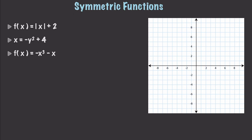So what is a symmetric function? It is a function that has sides that are reflections of each other. I'm going to use these three sample functions to show you exactly what I mean. So let's take the first function that has an absolute value inside of it and graph this out. You can see here that the left side and the right side are reflections of each other. This first function is what is called y-symmetric, because the graph on the left of the y-axis is a reflection of what is on the right.